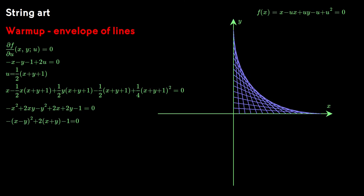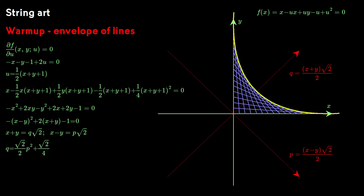And now let's define a new coordinate system p and q that's tilted 45 degrees with respect to x and y. When we rewrite x plus y and x minus y as the appropriate multiples of p and q, we can tell by inspection that the formula defines a parabola and we can plot it easily.